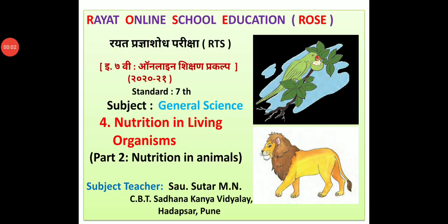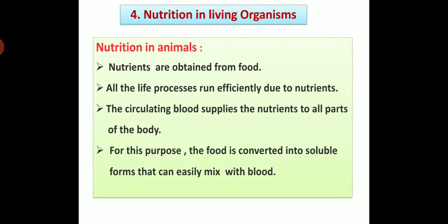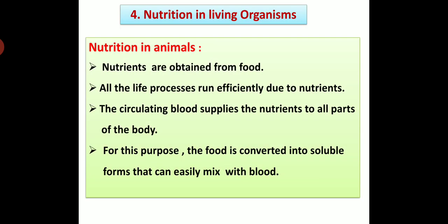General Science Chapter 4: Nutrition in Living Organisms, Part 2 - Nutrition in Animals. Nutrients are obtained from food. All the life processes run efficiently due to nutrients. The circulating blood supplies nutrients to all parts of the body. For this purpose, the food is converted into soluble forms that can easily mix with blood.